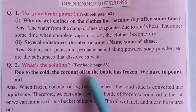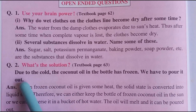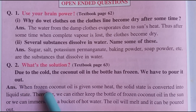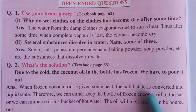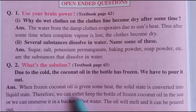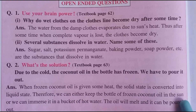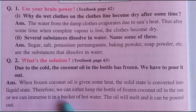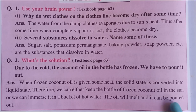What's the solution? Due to the cold, the coconut oil in the bottle has frozen and we have to pour it out. Answer: When frozen coconut oil is given some heat, the solid state is converted into liquid state. Therefore, we can either keep the bottle of frozen coconut oil in the sun or immerse it in a bucket of hot water. The oil will melt and can be poured out.